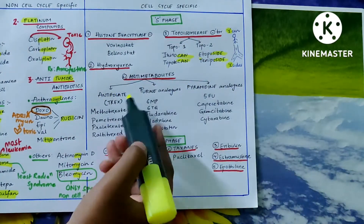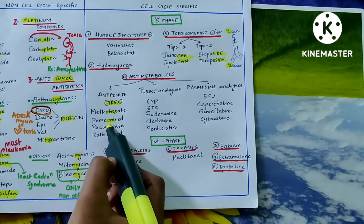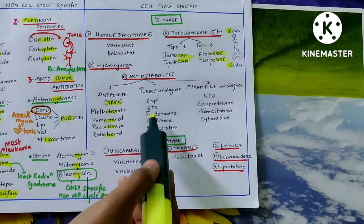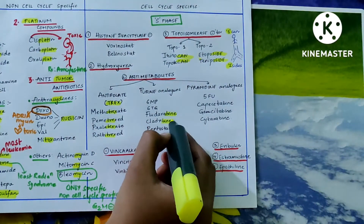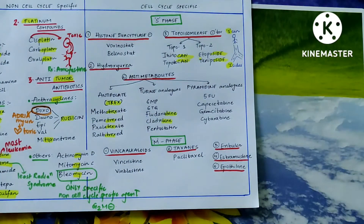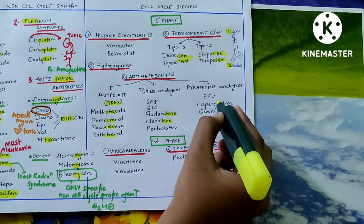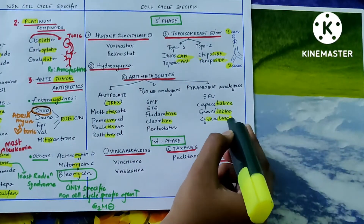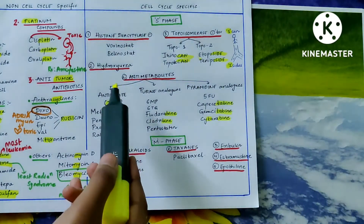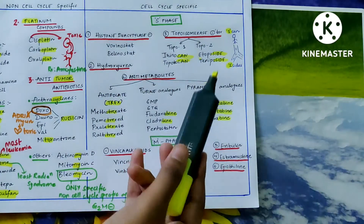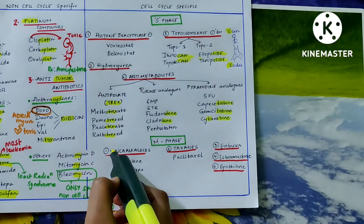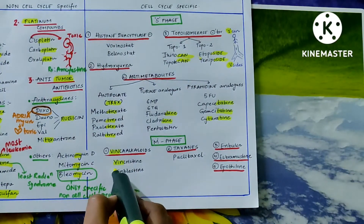In antimetabolites: antifolates have '-trex' in each drug name — methotrexate, pemetrexate, pralatrexate, etc. Purine analogues include 6-MP, 6-TG, fludarabine, cladribine, and pentostatin — they end with '-bine.' Pyrimidine analogues end with '-tabine': cytarabine, gemcitabine, capecitabine, and 5-fluorouracil.